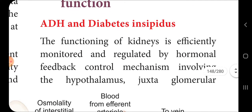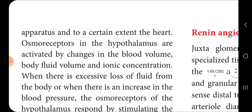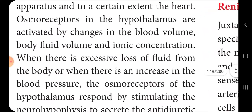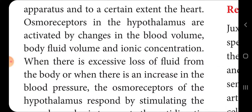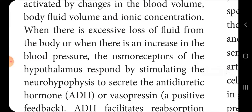The functioning of the kidneys is monitored and regulated by a hormonal feedback control mechanism involving the hypothalamus and the juxtaglomerular apparatus, and to a certain extent the arteries. The osmoreceptors in the hypothalamus are activated by changes in blood volume, body fluid volume, and ionic concentration. When there is excessive loss of fluid from the body, or an increase in blood osmotic pressure, the osmoreceptors of the hypothalamus respond by stimulating the neurohypophysis to secrete the anti-diuretic hormone or vasopressin.